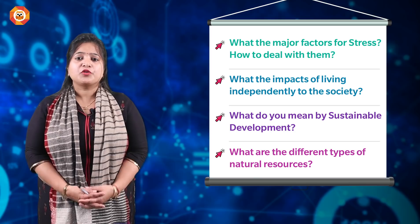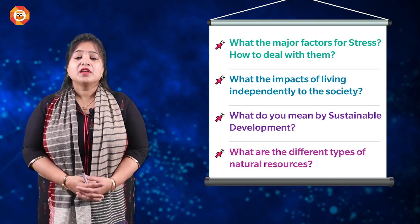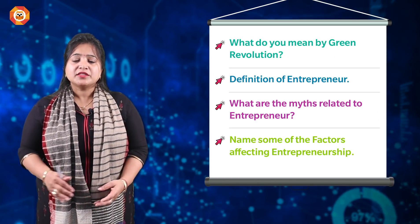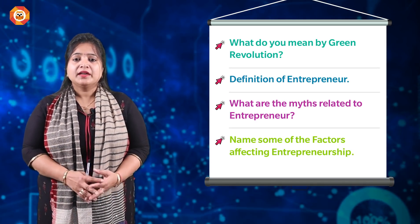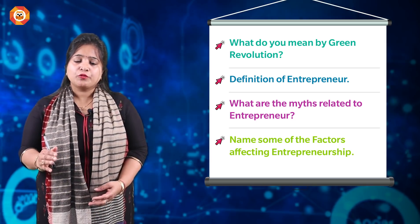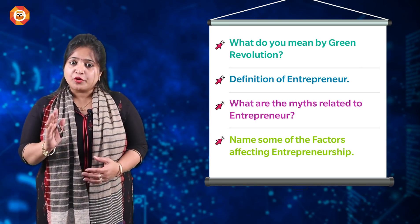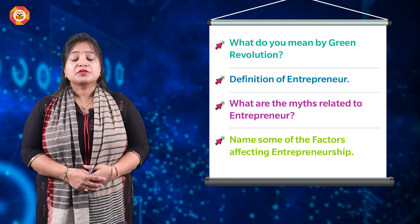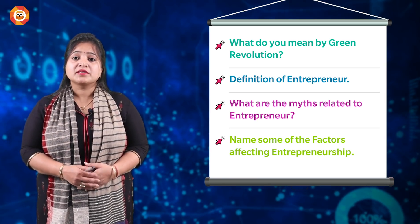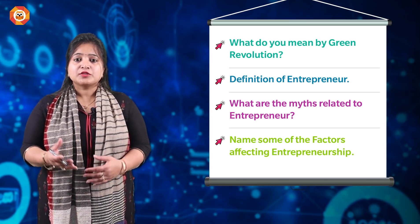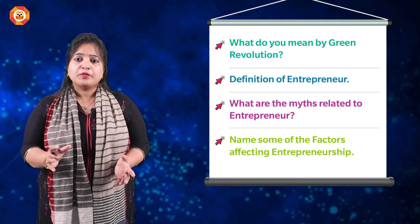Other important topics from Employability: what are the different types of natural resources, what are the schemes launched by the Government of India, and what is the Green Revolution? These questions are very important. Also, a section that many students find confusing is about entrepreneurship: what is the definition of an entrepreneur, what are the myths about entrepreneurs, what is entrepreneurship, and what are the factors that affect society through entrepreneurship.